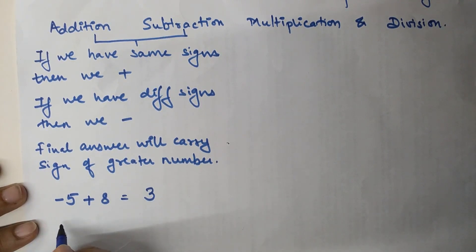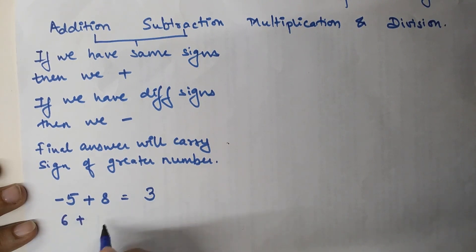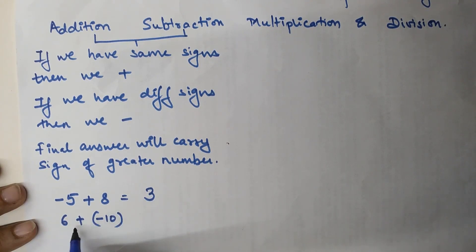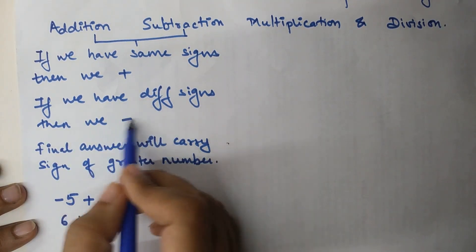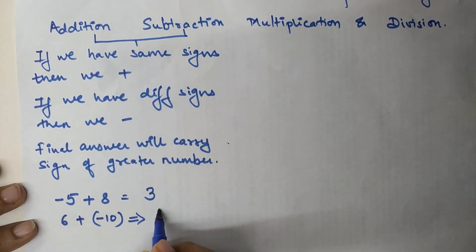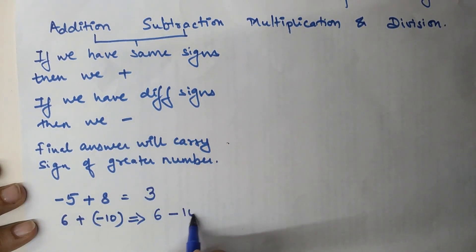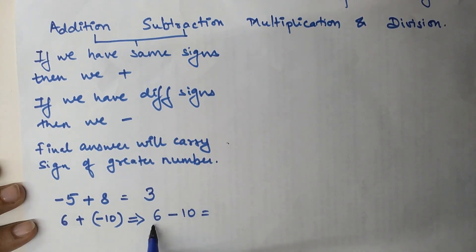Now let's take another example: 6 plus minus 10. Here we have two signs close to each other, and both of them are opposite — they are different signs. We still apply the same rule: plus and minus together become minus, so this turns into 6 minus 10.